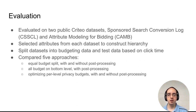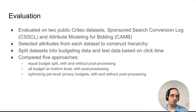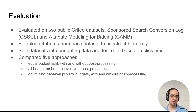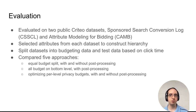For each dataset, we compared five approaches: an equal budget split among the levels of the tree with and without post-processing; putting all the privacy budget on the leaves and then inferring the estimates of the other levels of the tree using post-processing; and our optimized approach for per-level privacy budgets with and without post-processing.